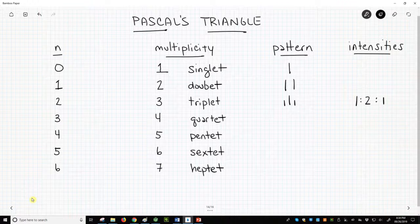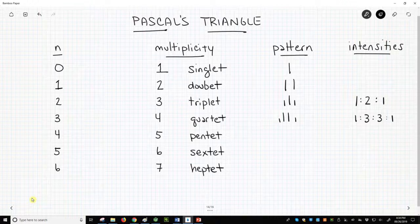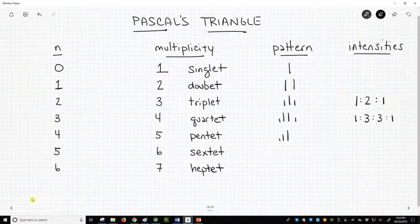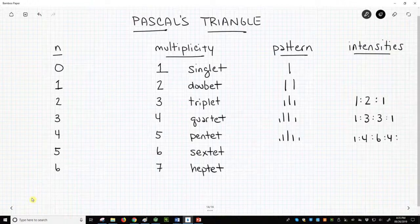The quartet is 4 lines, and it has relative intensities of about 1 to 3 to 3 to 1. The pentet is 5 lines. It's 1 to 4 to 6 to 4 to 1.